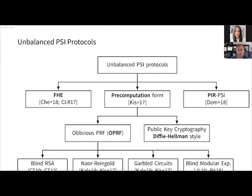Here's a short overview of the related work in unbalanced PSI protocols. We have some PSI protocols based on fully homomorphic encryption, some based on private information retrieval, protocols that can be transformed into pre-computation form, and some based on oblivious pseudorandom functions with many different instantiations — for example blind RSA, the Naor-Reingold PRF, garbled circuits, and blind modular exponentiation. We also have some protocols based on other public key cryptography.